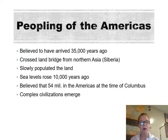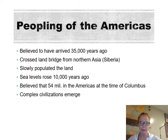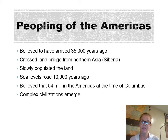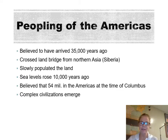Some people estimate there were about 54 million people living in the Americas at the time Christopher Columbus came. Of course, those numbers were going to be reduced drastically because the native population was devastated by diseases brought over by Europeans that they had no immunity to. There were complex civilizations, but none of them were really located here in what is now the United States.